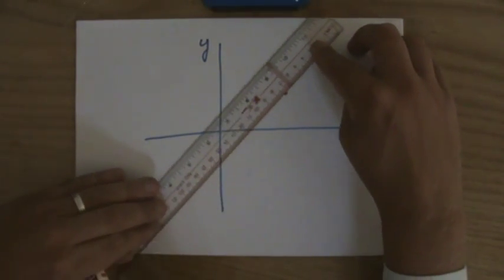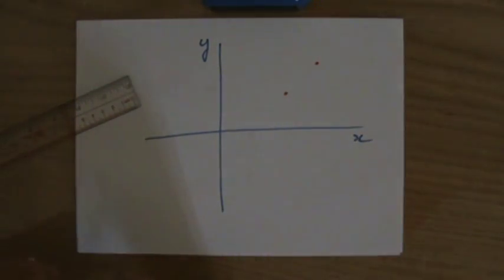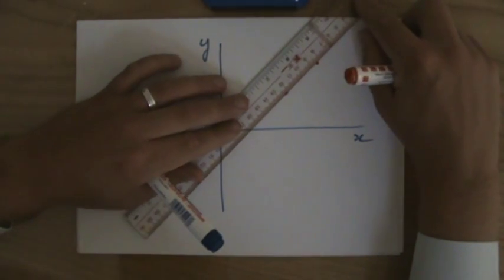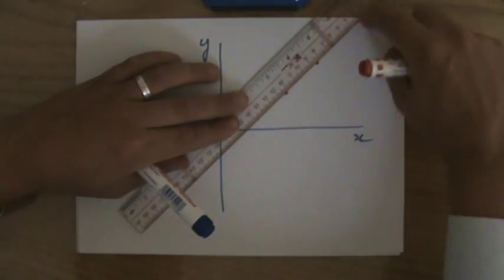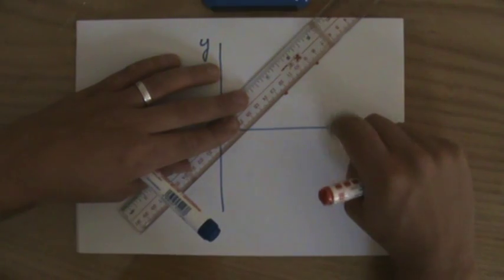If I have two coordinates, now this is my line. Are there any other possibilities? No. So I need two coordinates to draw a line.